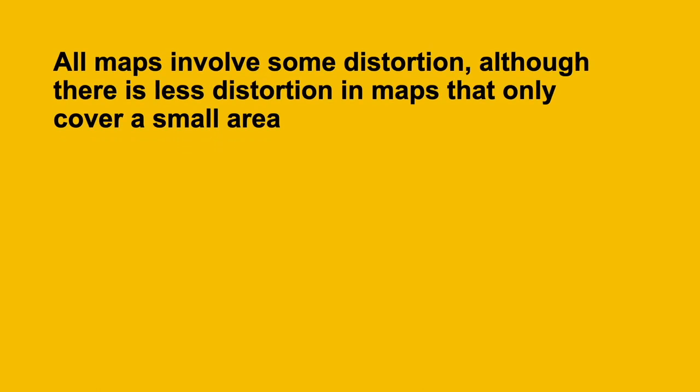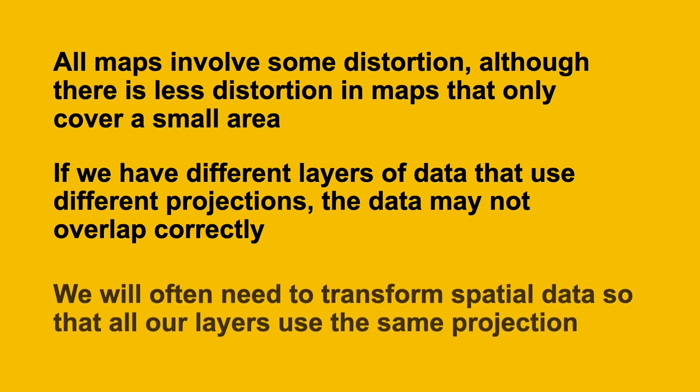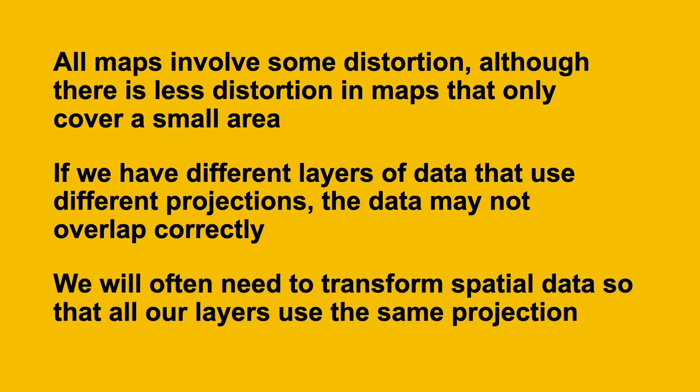That's why you need to know about projections, at least to a certain extent, for crime mapping. In summary, all maps involve some distortion, although there's less distortion in maps that only cover a small area of the Earth. But even if our map covers only a small area, if we have different layers of data that use different projections, the data may not overlap correctly. So we will often need to transform spatial data so that we can represent multiple layers on the same map.